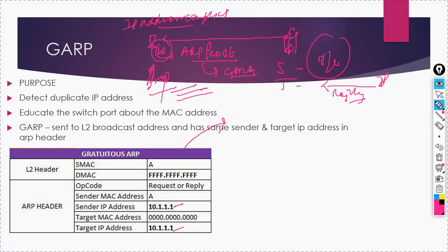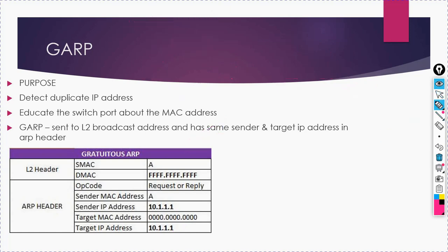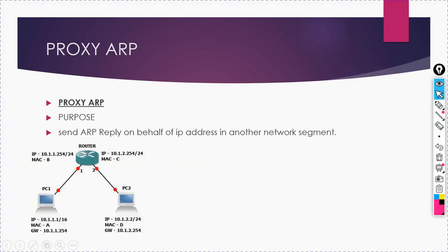So basically the purpose of GARP is to detect duplicate IP addresses so that you can protect yourself from IP address conflict. Now for Proxy ARP — the use is the same but with a different variation. The purpose of Proxy ARP is to send a reply on behalf of another IP address in a different subnet.